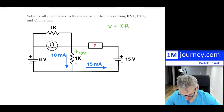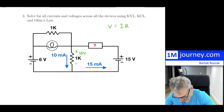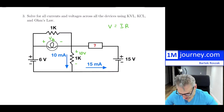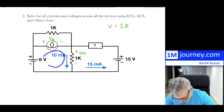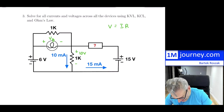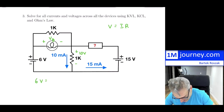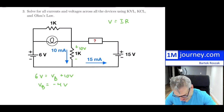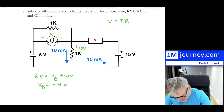Applying KVL around a loop: 6 volts equals V_bulb plus 10 volts, which gives a negative result — meaning the assumed direction was wrong. Flipping the direction, V_bulb = 4 volts across that element.